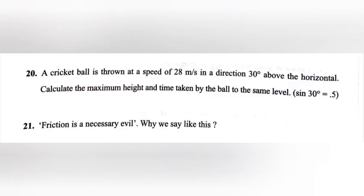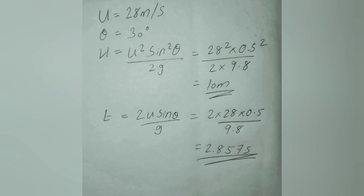Question 20: A cricket ball is thrown at a speed of 28 m per second in a direction of 30 degrees above the horizontal. Calculate the maximum height and time taken by the ball to return to the same level. Answer: U is equal to 28 m per second. Theta is equal to 30 degrees. H is equal to u square sine square theta divided by 2g, which equals 28 square into 0.5 square divided by 2 into 9.8, which equals 10 meter. So t is equal to 2u sine theta divided by g, which equals 2 into 28 into 0.5 divided by 9.8. Therefore, t is equal to 2.857 seconds.